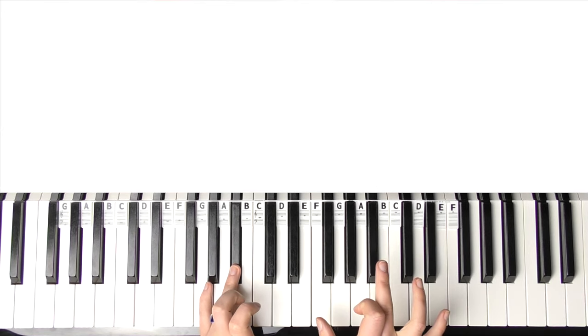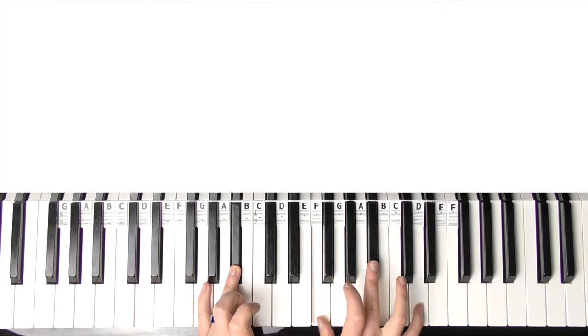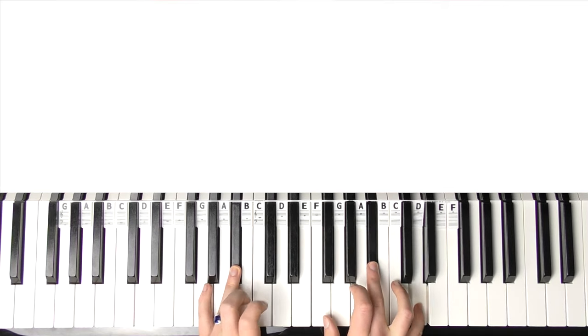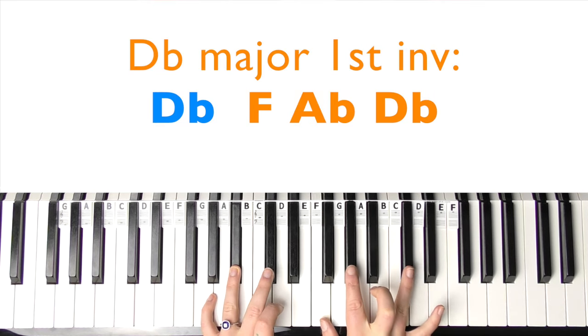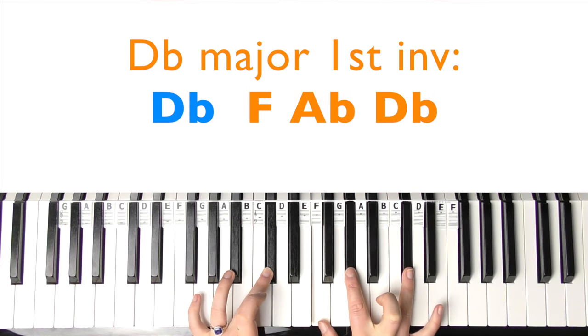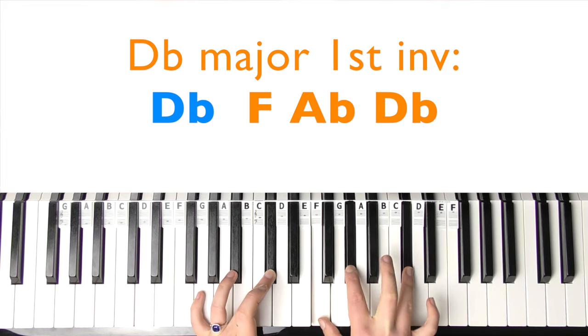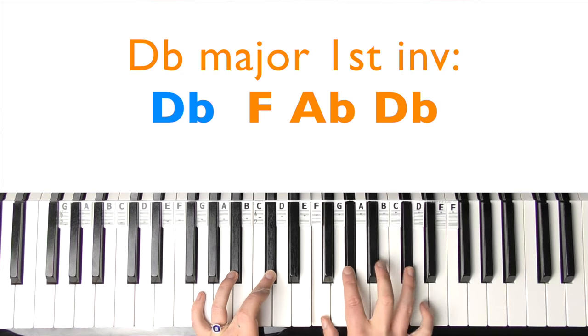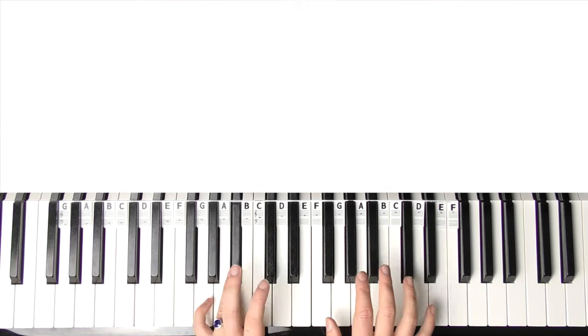Then you're going to play that B-flat major chord again, but you're going to break it up. So you're going to play B-flat, F, B-flat, and D. And then we have D-flat major. So that's D-flat in the left hand, and then first inversion of D-flat major in the right hand. So that's F, A-flat, and D-flat.